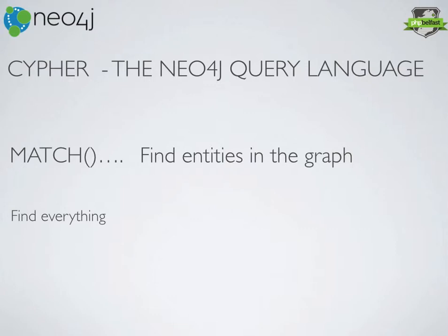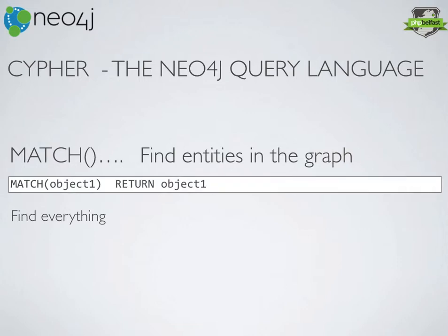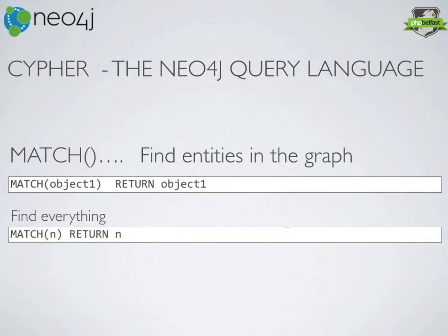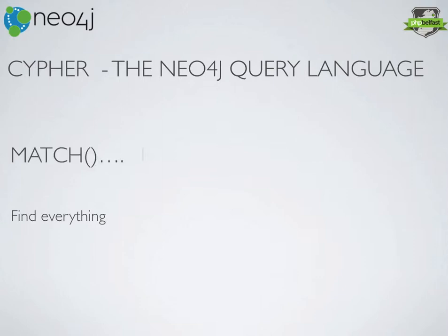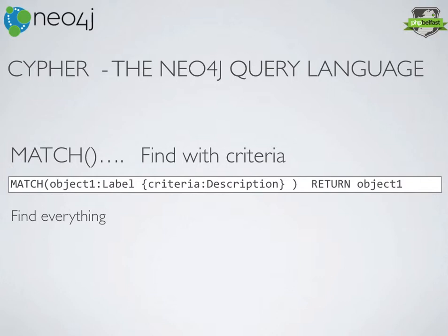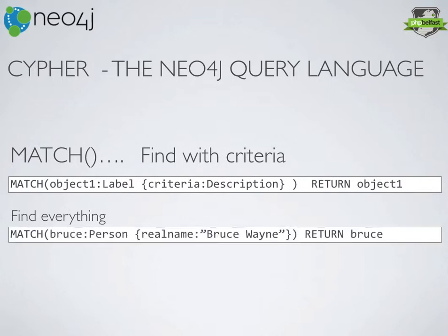MATCH is kind of like doing a SELECT statement in SQL — we use MATCH to find entities or relationships somewhere within the graph, and RETURN to actually return the result. If we want to find everything, we just do MATCH n RETURN n. If we want to find with certain criteria, we specify the label and describe the criteria. For example, MATCH bruce where bruce is a person, but only find the one whose real name is Bruce Wayne, and return that.